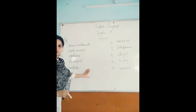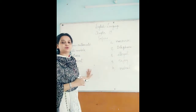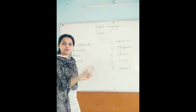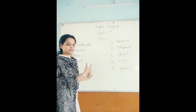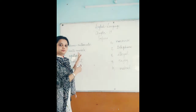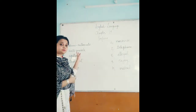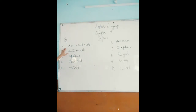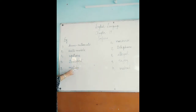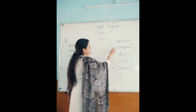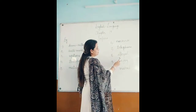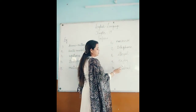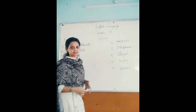Here I have some words in which we will easily be able to identify the prefix and the root word. Let's see how these words are formed and where the prefixes are. The first one is semi-automatic, second is automobile, third is upstairs, then transport, then mistake, then nonsense, telephone, illegal, enjoy, and mislead.